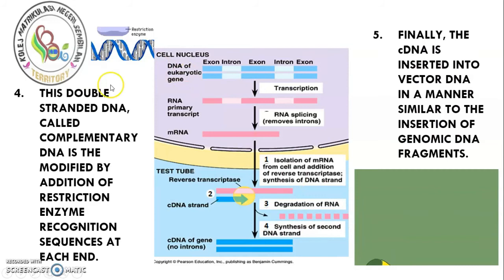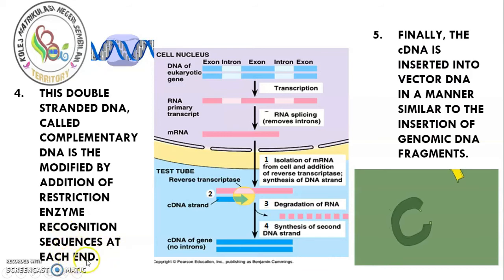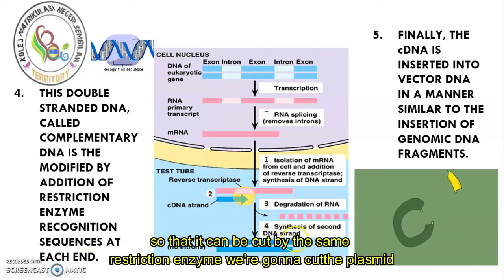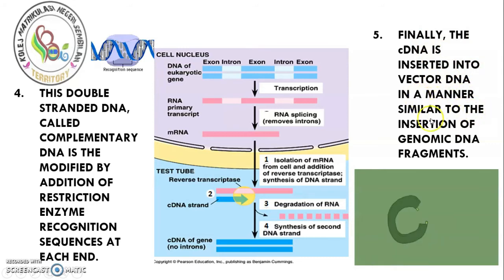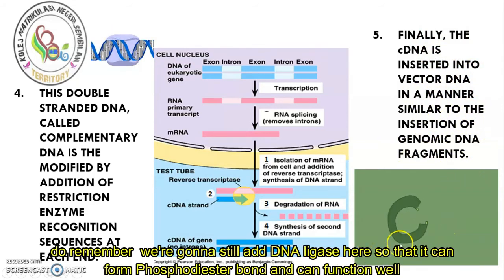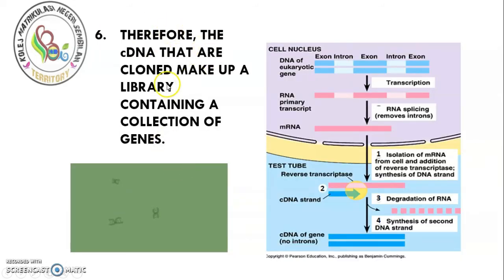This double-stranded cDNA is then introduced into a vector — in this example, a plasmid. It is modified by the addition of restriction enzyme recognition sequences at each end, so it can be cut by the same restriction enzyme used to cut the plasmid. The cDNA is then inserted into the vector DNA in a manner similar to the insertion of a genomic DNA fragment. Remember, we still add ligase to form phosphodiester bonds so it can function well. The cloned cDNA makes up a library containing a collection of genes.